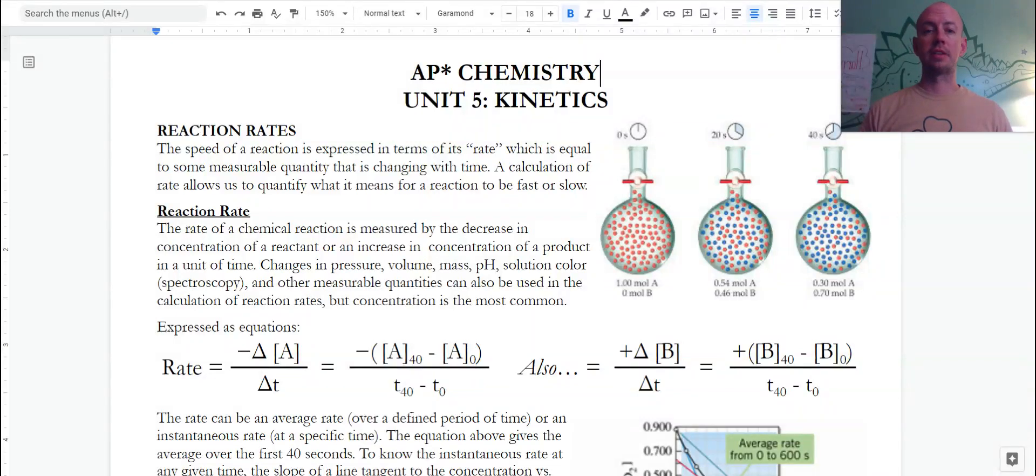Normally when we're looking at chemical reactions, we're concerned about what are we starting with and what are we ending with. Maybe a reaction type or how is the change happening. But another thing that we can study is how fast is the change happening. That study is called chemical kinetics or it's dealing with reaction rates.